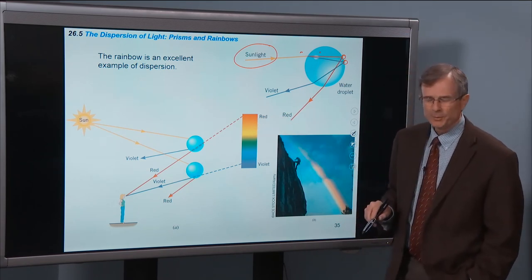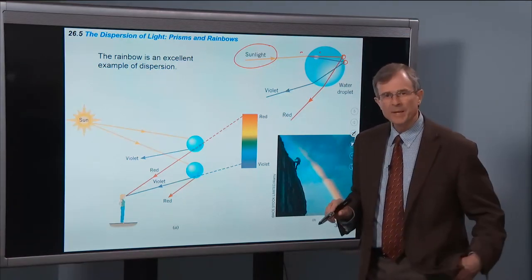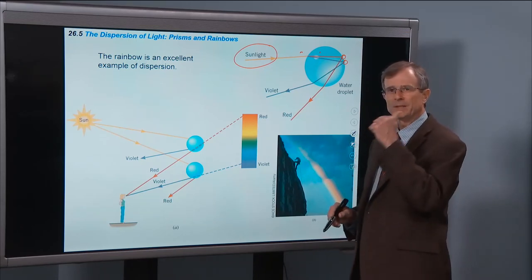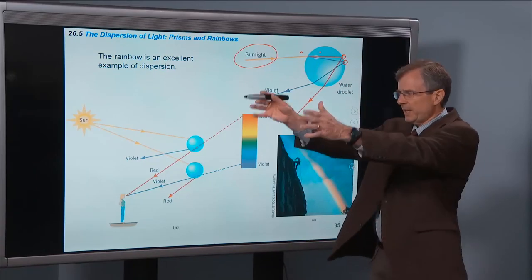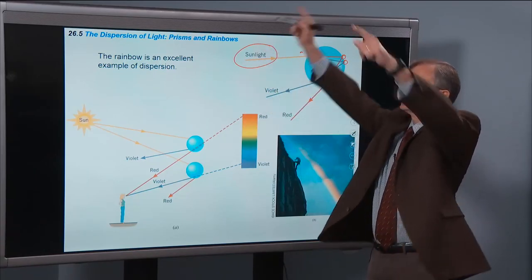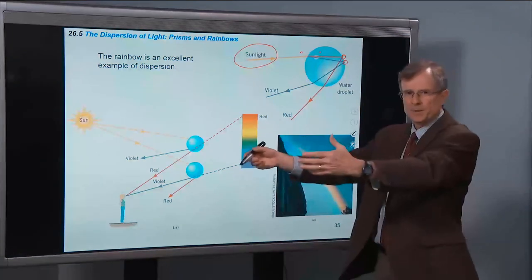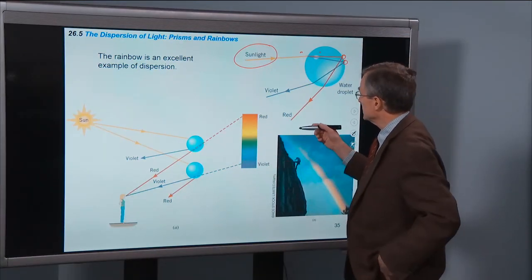That's why when you're looking at a rainbow, the sun is always behind you. And so if you've got the sun behind you, you look ahead of you, and you'll see this rainbow of color on the side of you that's opposite the sun. This is exactly what's happening here.